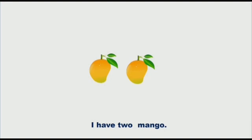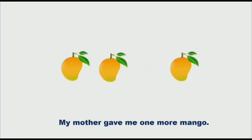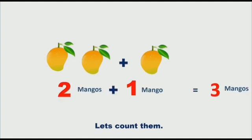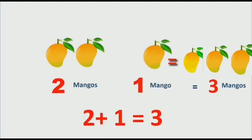Now let's learn addition through pictures. I have two mangoes, and my mother gave me one more mango. So how many mangoes do I have all together? Let's count them. Two mangoes plus one mango is equals to three mangoes. So what we did? We add them. Two plus one is equals to three. So all together I have three mangoes. It's so easy.